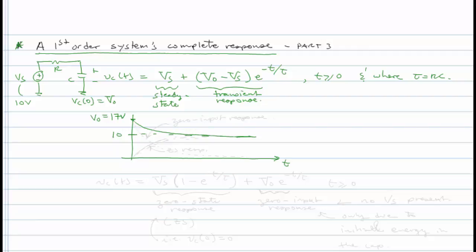And we'd seen before, if VO was equal to zero, it would start from zero and head up. But the rate at which it moves from one state to the steady state is the same regardless of what VO is, whether it's 17 volts or zero volts or any other voltage.